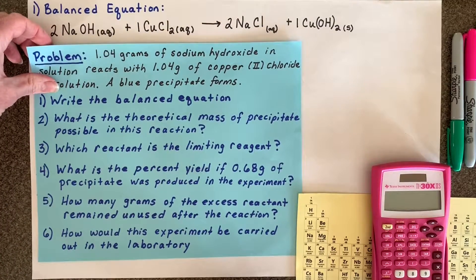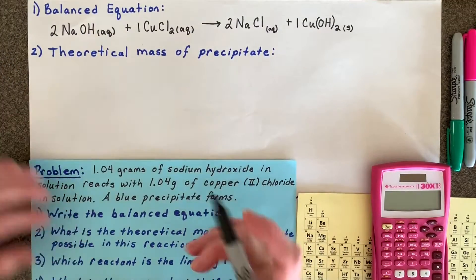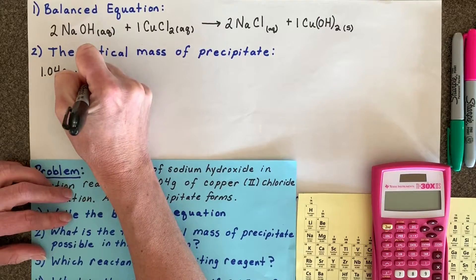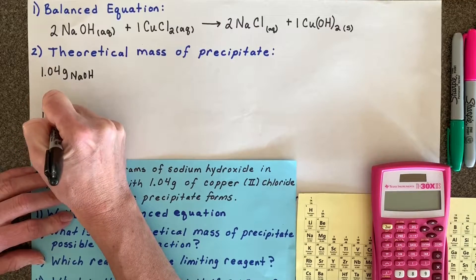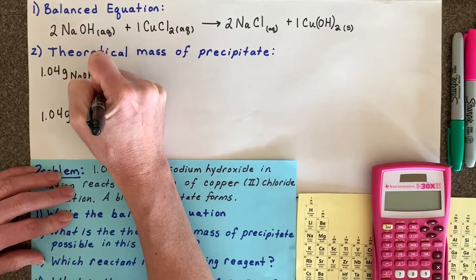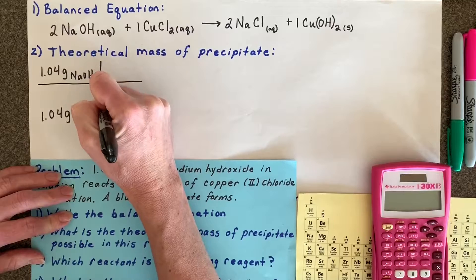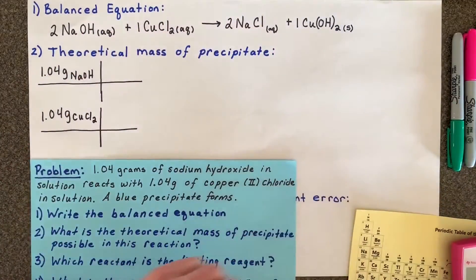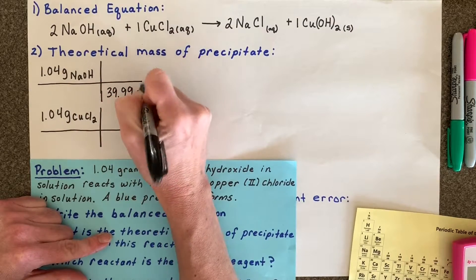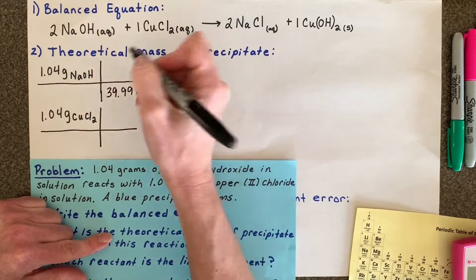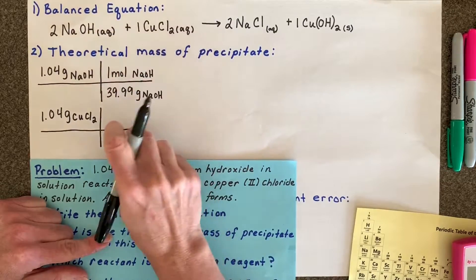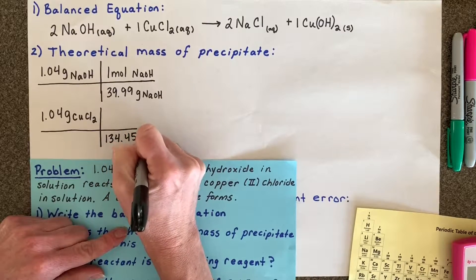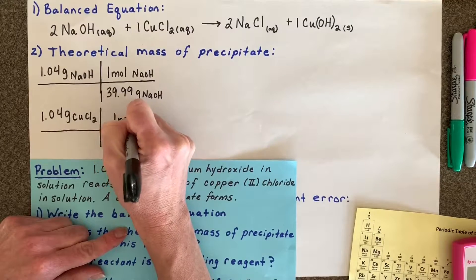On to the next step, which is calculating the theoretical mass of precipitate. The theoretical mass is the amount we can produce not in lab, but in theory on paper. We're going to start with 1.04 grams of sodium hydroxide and also 1.04 grams of copper two chloride. The next step is converting those into moles using molar mass. I have the molar masses already — 39.99 grams per mole for sodium hydroxide, and 134.45 grams per mole for copper two chloride.